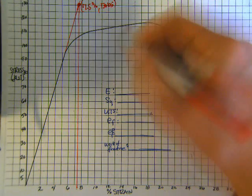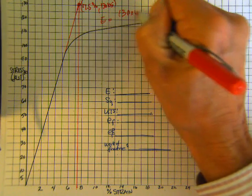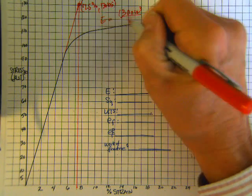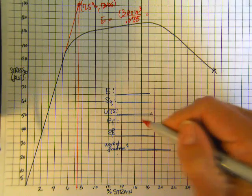Modulus is going to be the stress, 130 times 10 to the 3, and then convert percent strain to strain, 0.75.